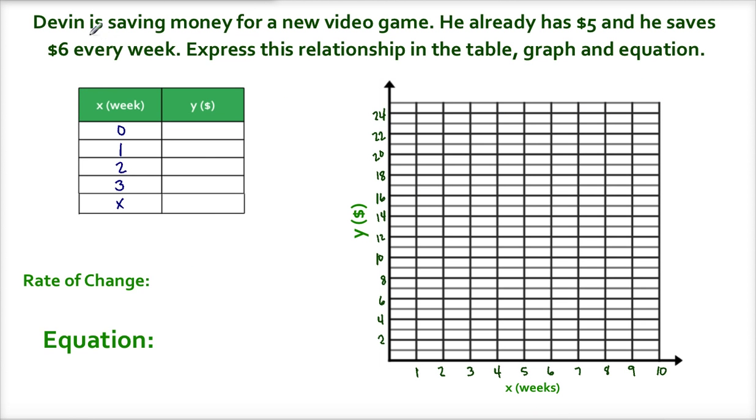So here's our example. Devin is saving money for a new video game. He already has $5, and he saves $6 every week. Express this relationship in the table, the graph, and the equation. Okay, hopefully you can see that this situation is a little bit different than what you've seen before, because it says he already has $5, and he saves $6 every week.